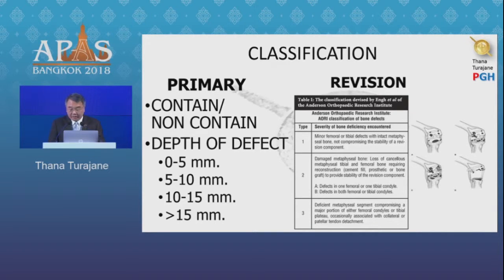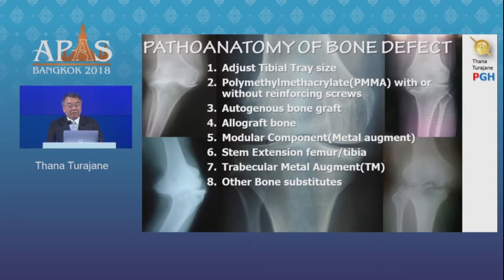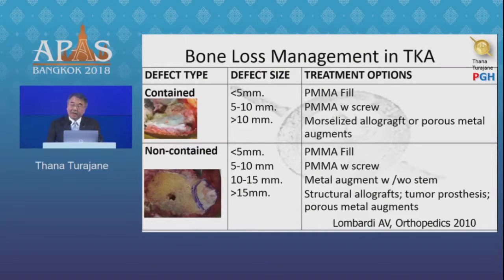We will now talk about revision in this talk. When you understand the pathoanatomy of bone defects, you need to think: what are we going to do? First, we can just adjust the tibial tray size. Second, put just cement — with or without a screw. Third, the graft choice can be autologous or allograft. Next is the modular component: do we need metal augmentation, do we need a stem, and where will the stem go — femur or tibia? And if nothing else suffices, do we need to add trabecular metal augmentation or bone substitutes? These are many questions to answer.